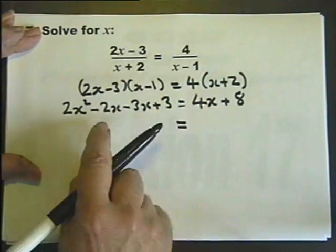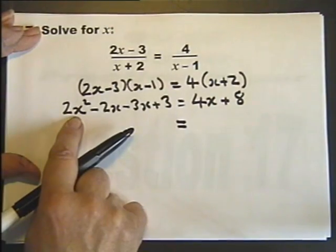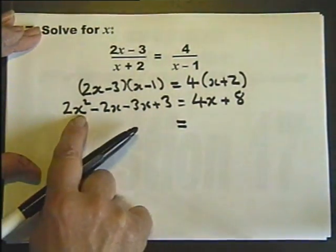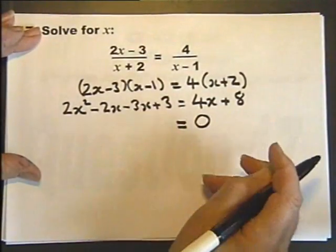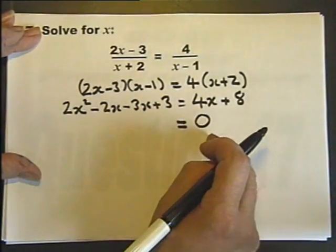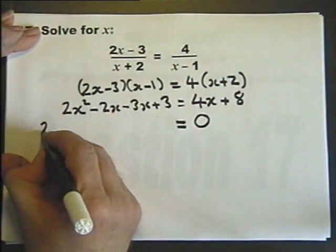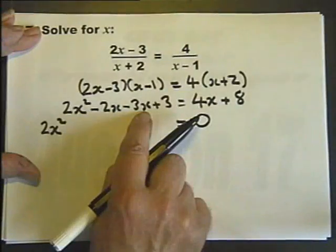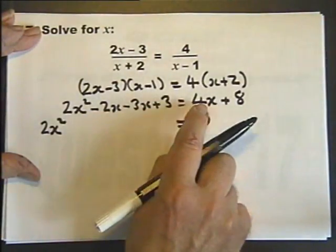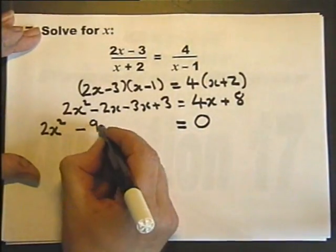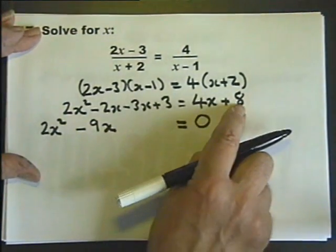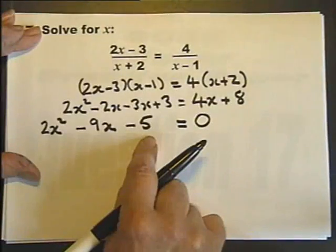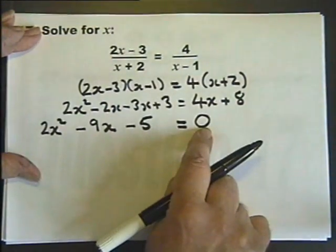Now we've got a quadratic equation, and very often—not always, but virtually always—when you have a quadratic equation, you have to rewrite it as a zero equation. In other words, manipulate it so it equals 0. So this is minus 5x; subtracting 4x from both sides gives minus 9x; subtracting 8 from both sides gives minus 5. So here we've got a quadratic equation as a zero equation.